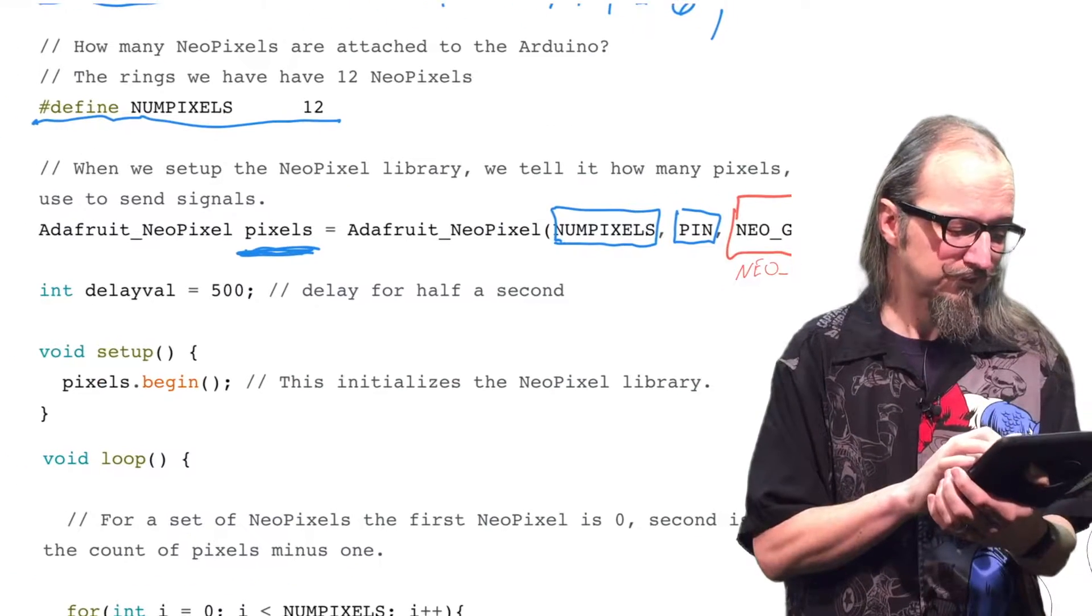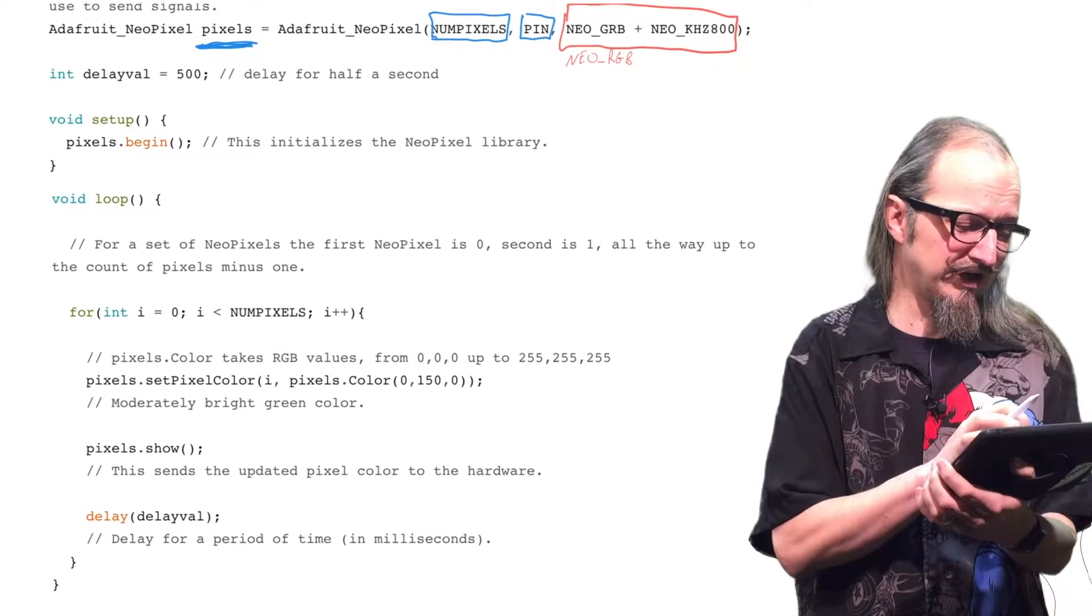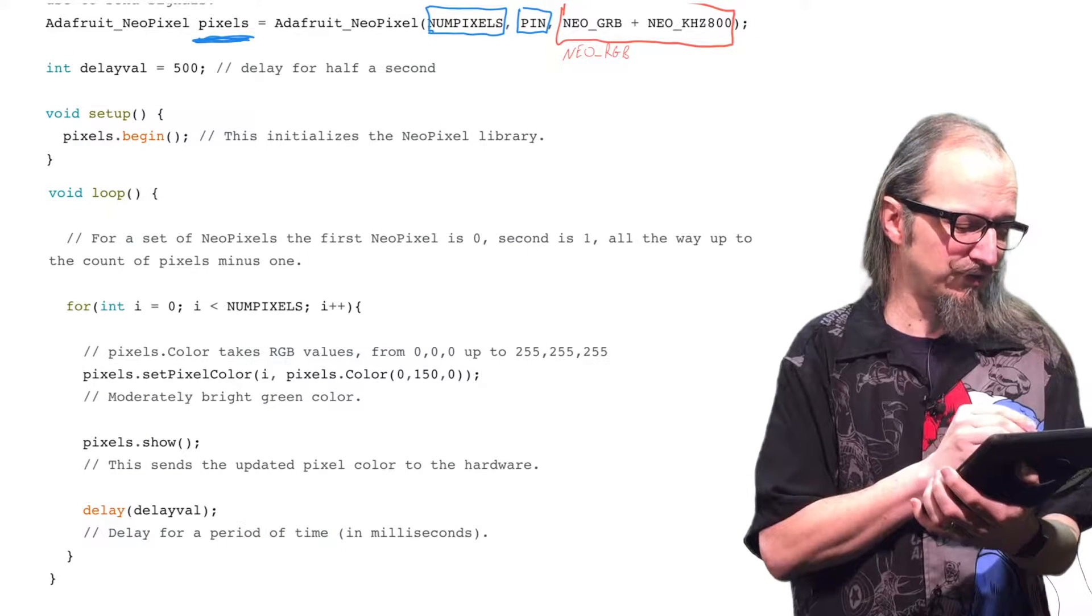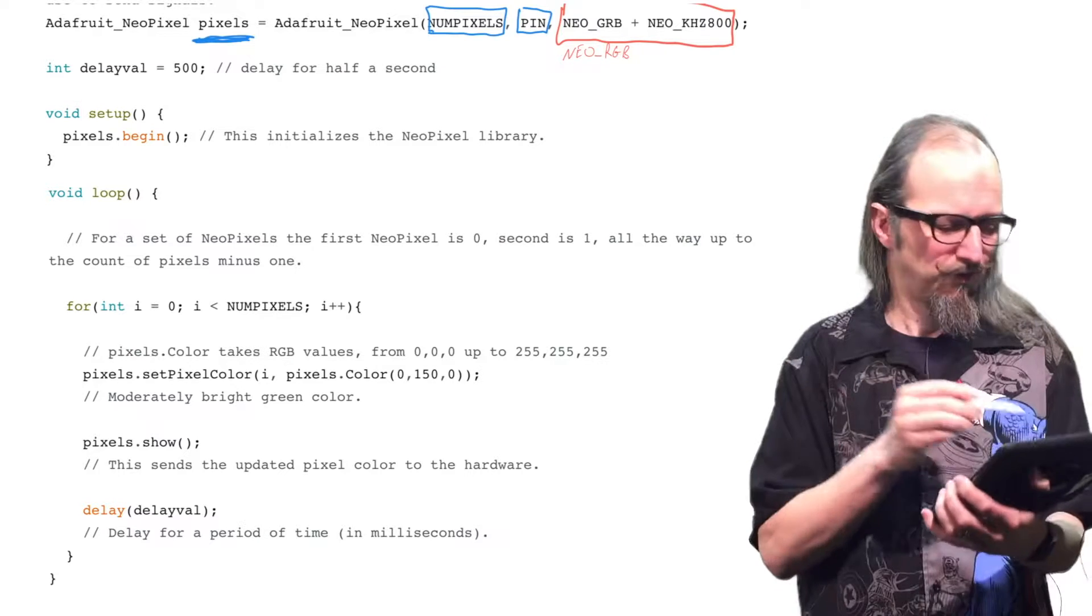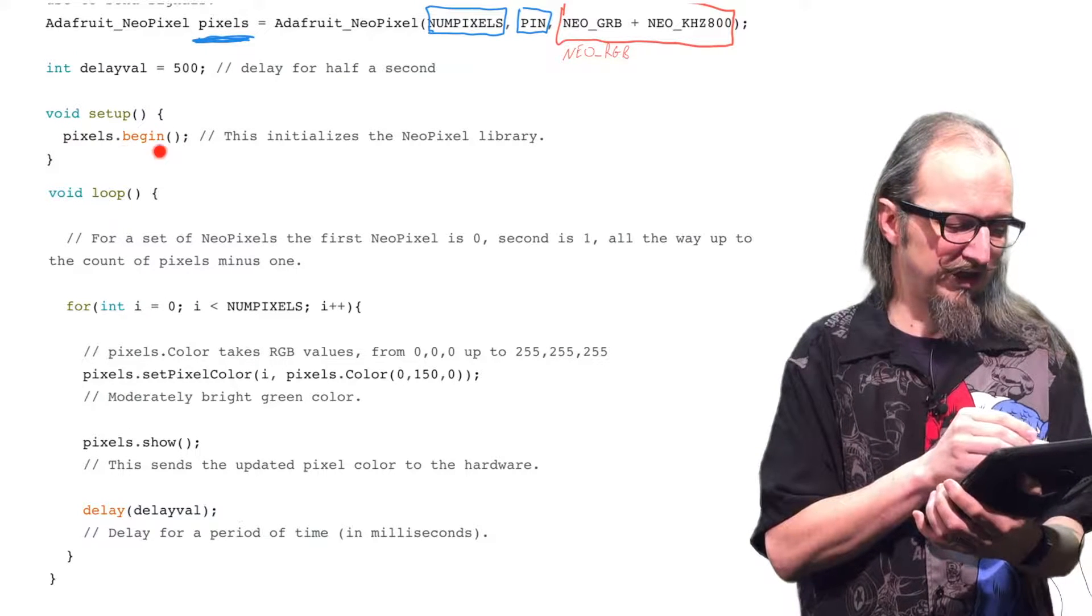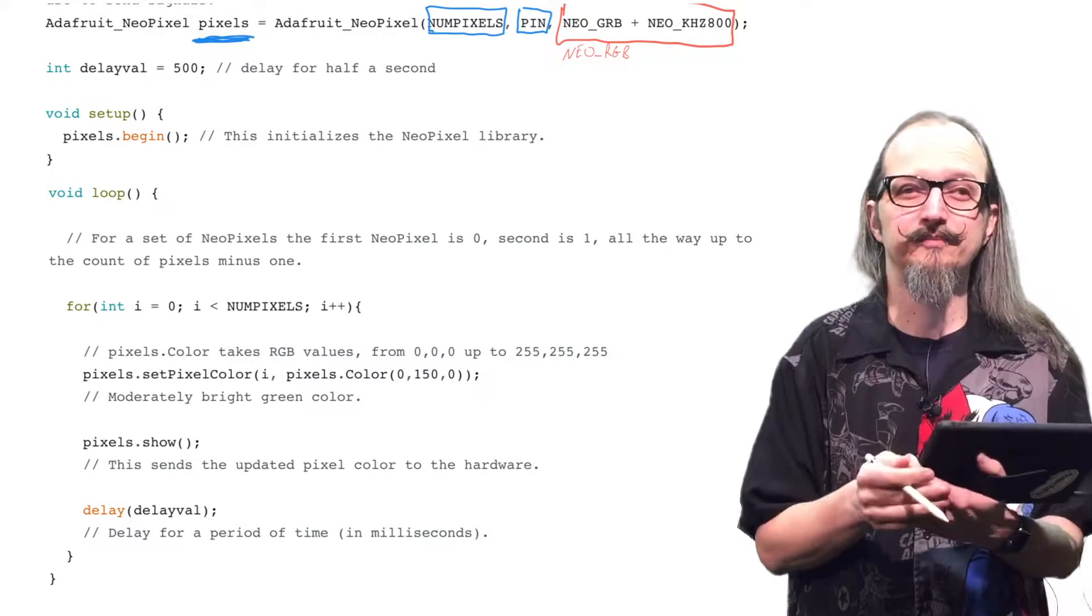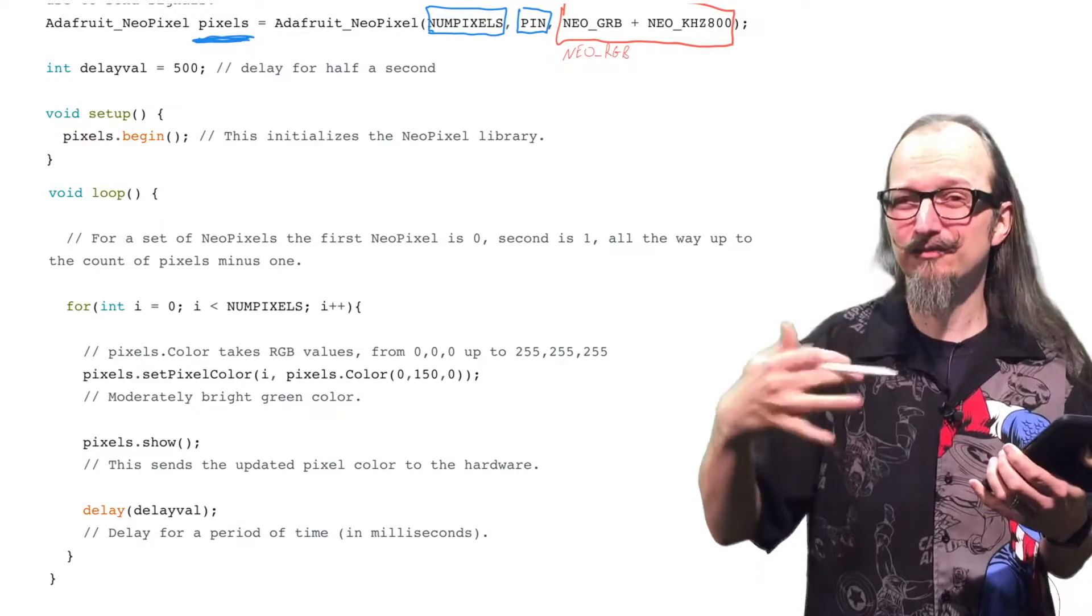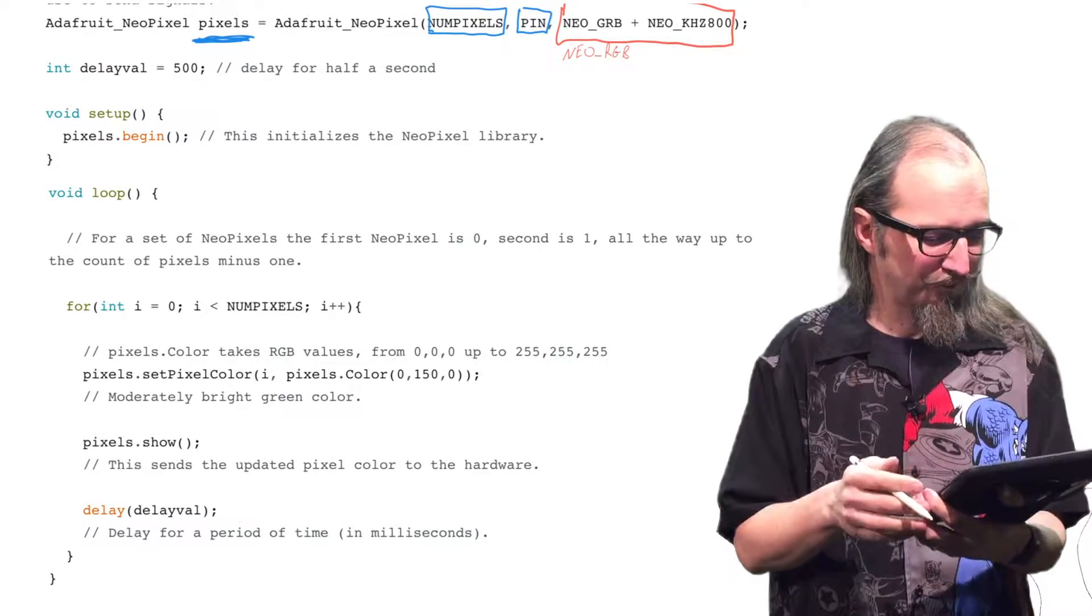Now, this next bit, delayVal, we know what that is. We're just creating a variable. And then in our setup, just like when we did serial.begin, we need to do pixels.begin. So, this is saying take our object pixels that we created up here and start it up. Get it ready to do something. Nothing's going to happen yet. We're just saying make it ready. So, we only have to do that once, so we put that in our setup.